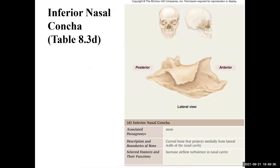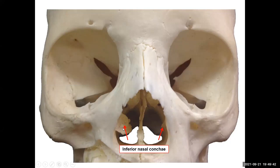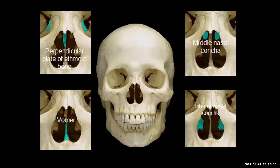The inferior nasal concha is that scroll-shaped bone found on the lateral walls of the nasal cavity. It helps to swirl the air, making it more turbulent as you breathe in through your nose. Right above the inferior nasal concha is the middle nasal concha, which is part of the ethmoid bone — along with the perpendicular plate of the ethmoid bone. You can also see the vomer right below.